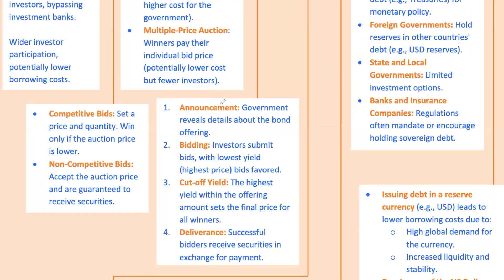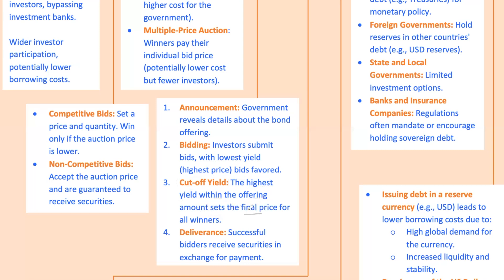Let's break down how a single price auction works step by step. First up: the announcement — the government lets everyone know the details, including how much they're offering, what type of bonds are up for grabs, and how long those bonds will be around before they mature. Next, bidding: investors submit their bids, ranked based on the lowest yield. Remember, lower yield means higher price, so everyone's trying to get in at the best rate. Now comes the crucial part — the cutoff yield, the highest yield within the offering that sets the final price. All winning bids get the bonds at that price — hence single price. Finally, successful bidders hand over their cash and get the bonds in return.